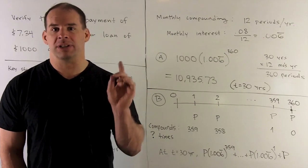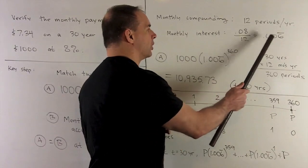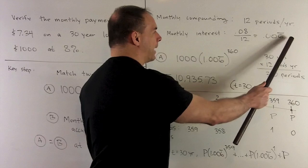So we take our 8%, we divide by 12. So I'll have .08 divided by 12, gives me .006 repeating. So that's going to be the thing we multiply by to get interest.